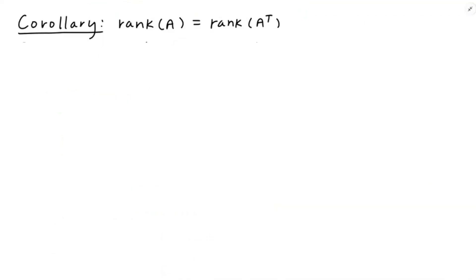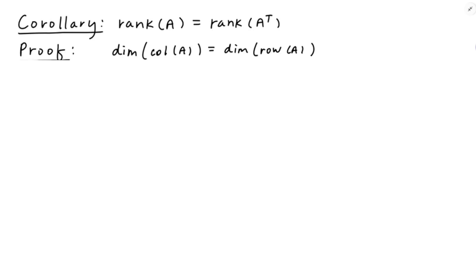Now, equipped with that fact, it's going to be almost trivial to verify the corollary that the rank of A and the rank of A transpose are going to be the same. Because that's really what the rank is — the rank of the transpose is the dimension of the row space and the rank is the dimension of the column space. I just showed you that the dimension of the column space of A is equal to the dimension of the row space of A, and the row space of A is equivalent to the column space of A transpose. So the rank of A is going to equal the rank of A transpose.